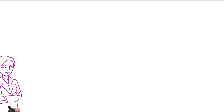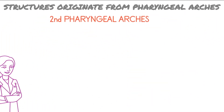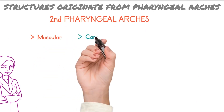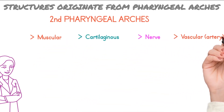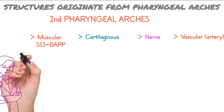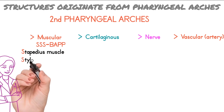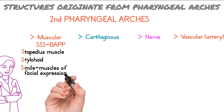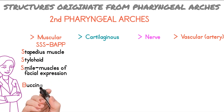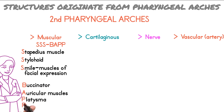Now the structures formed from the second pharyngeal arch: muscular, cartilaginous, nerve, and vascular components. The muscular component has the mnemonic 'triple S-B-A-P-P.' From S, there are muscles of stapedius, stylohyoid, and smile muscles, which include muscles of facial expression. B is for buccinator, A for auricular muscles, P for platysma muscle, and P for posterior belly of digastric muscle.